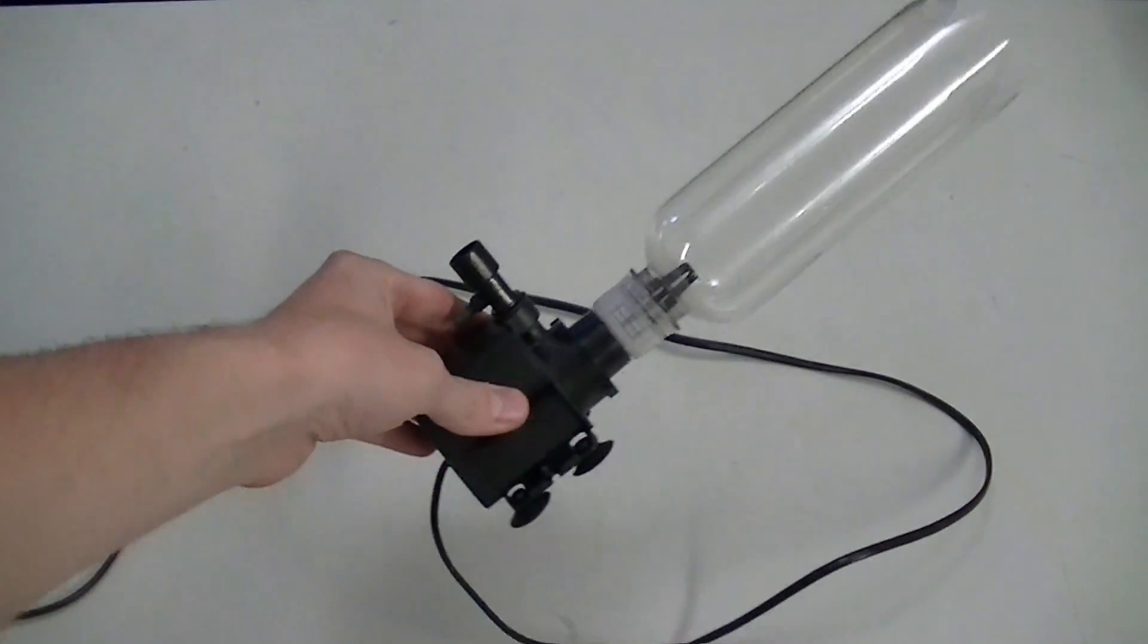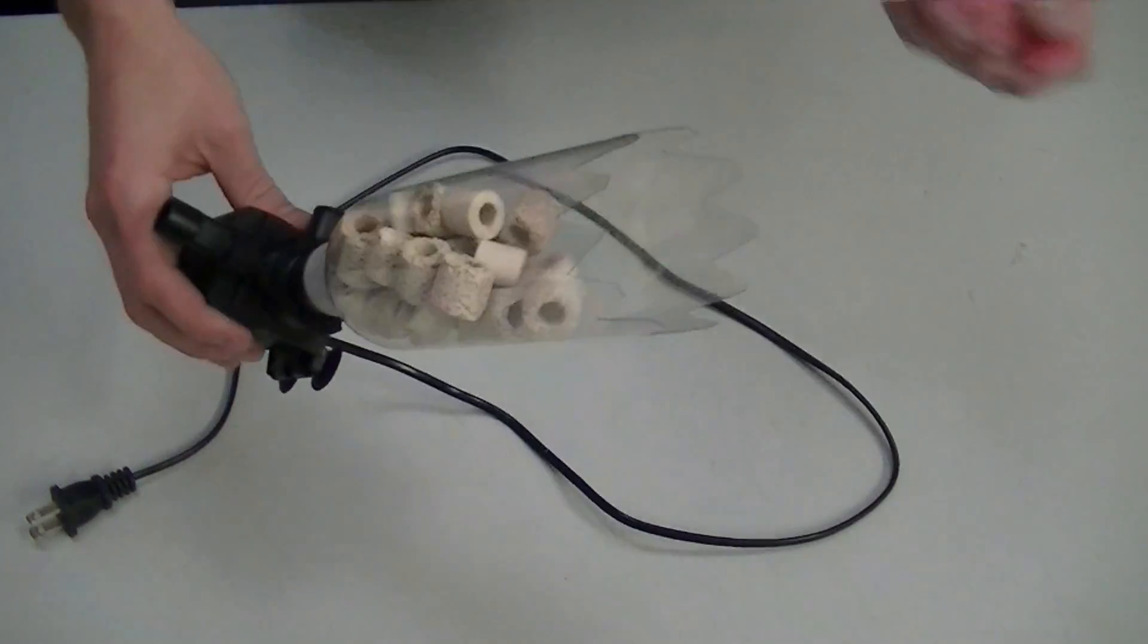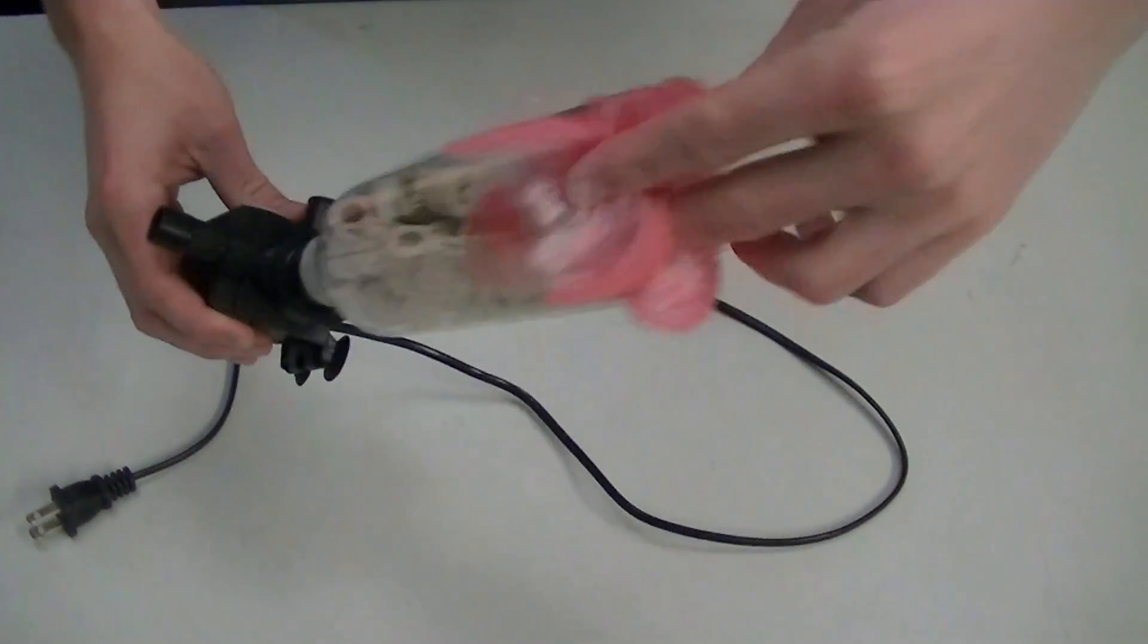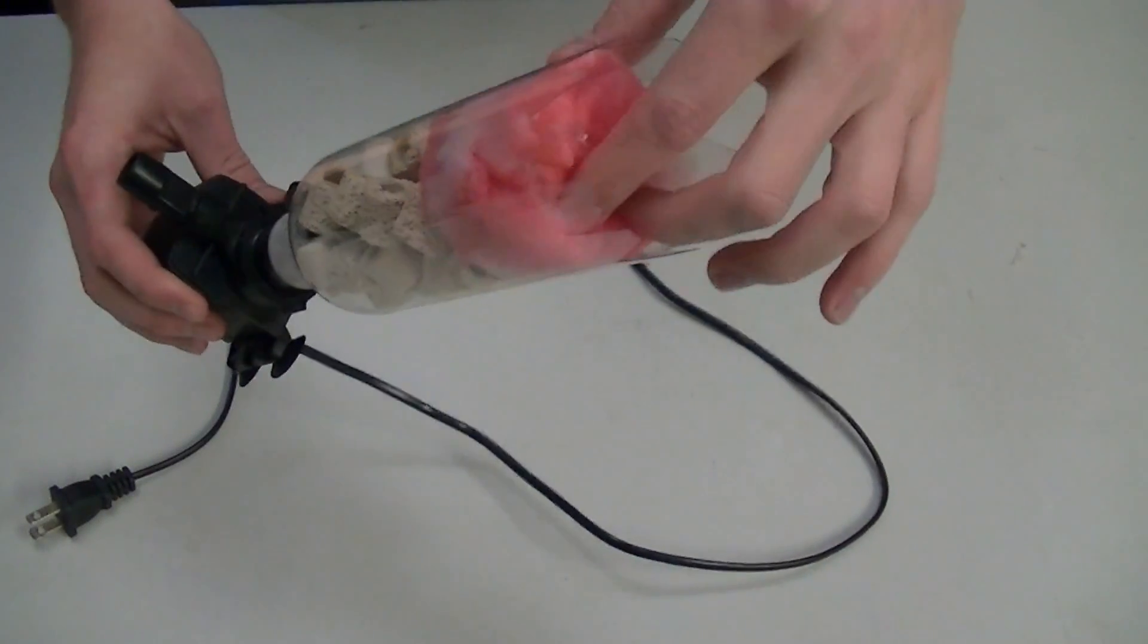Making sure that our connection is snug, we can now move on to adding media. First, we add ceramic rings to about the halfway mark on the bottle. Then, add in about a handful of cut-up filter padding. This will provide good mechanical filtration prior to our biological step.